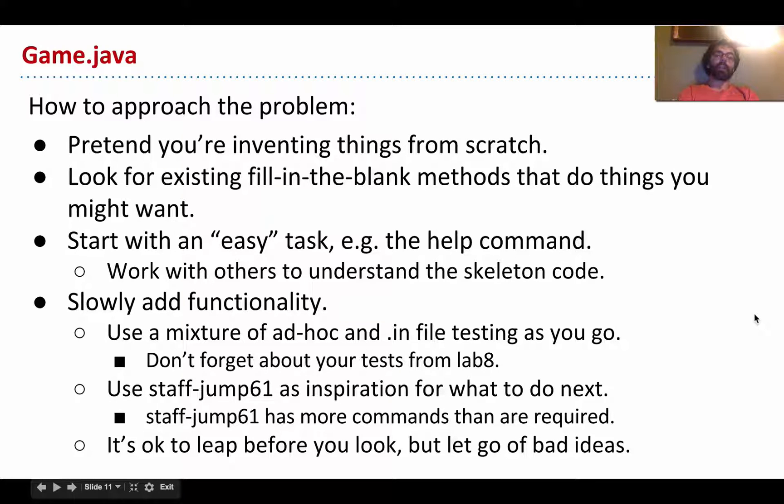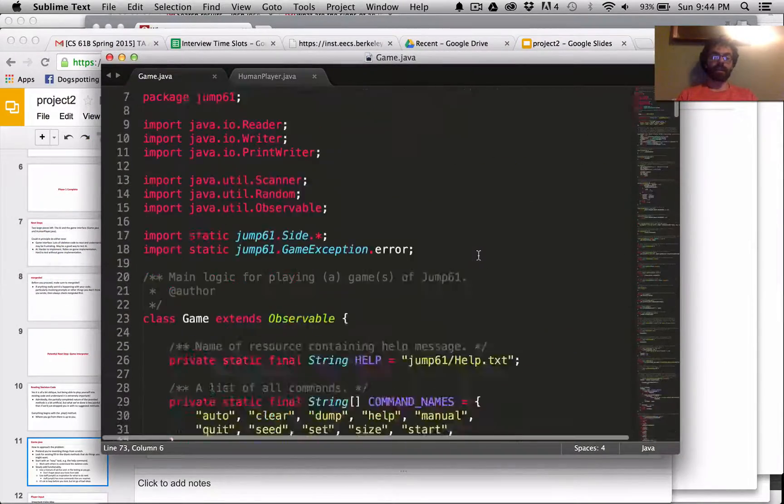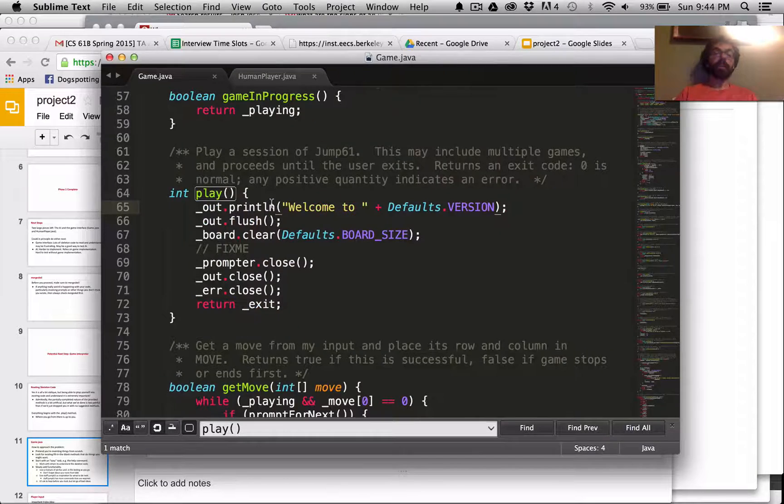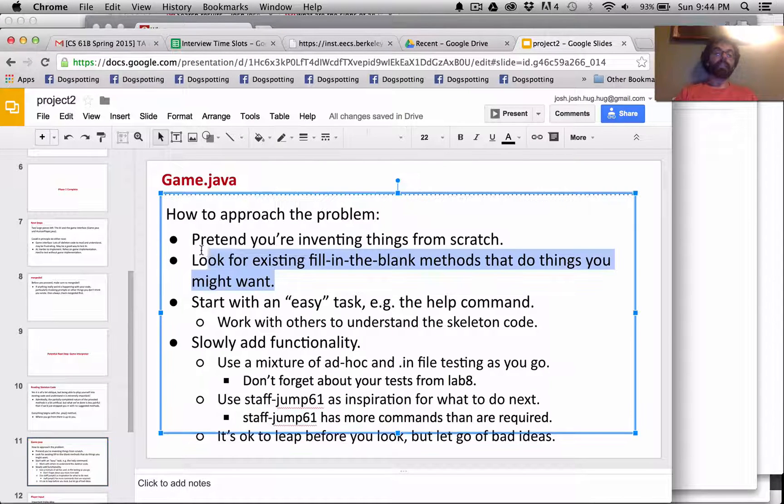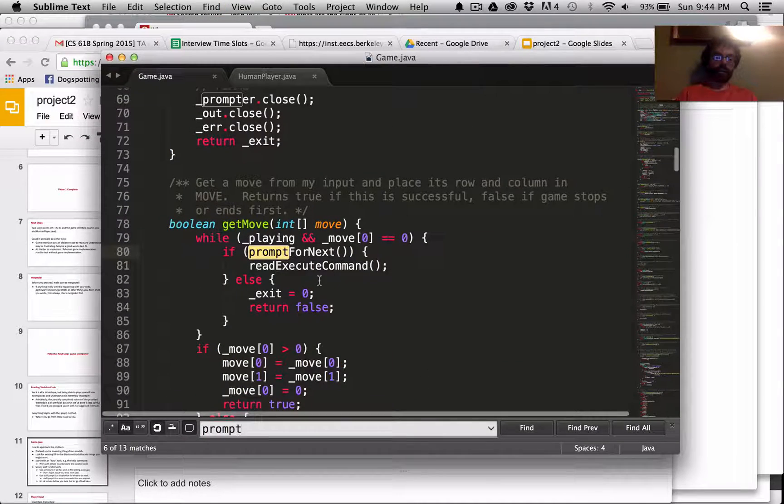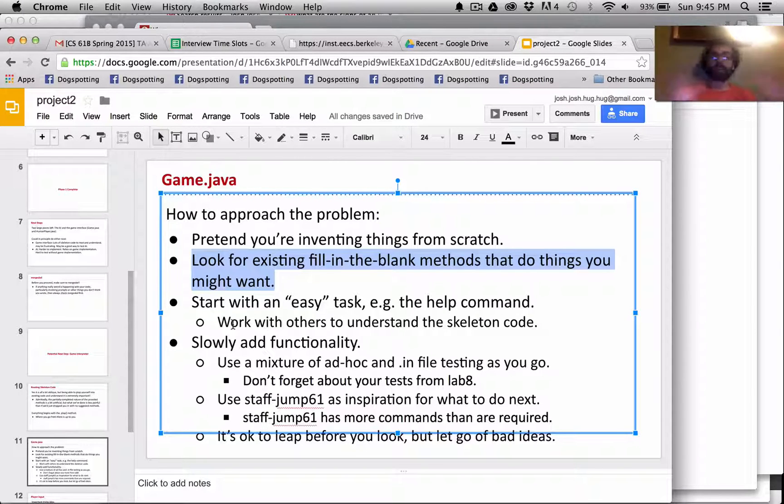So, one way to approach this issue, how do I do things, the way I like to do it, is pretend I'm inventing everything from scratch. Like, I don't even really have game.java. I mean, I have the play method, but I don't have anything else outside of it. So, I look here, and I say, okay, so based on all this stuff, how do I work from here? And then, as soon as I get an idea, like, wouldn't it be nice if I could ask the user, or to print a prompt and ask the user for something, I'll scroll through this thing, and I'll see, okay, there's prompt for next.